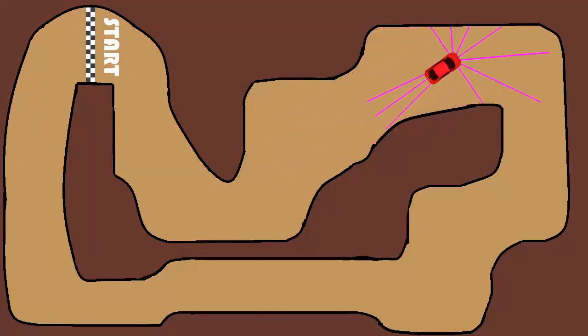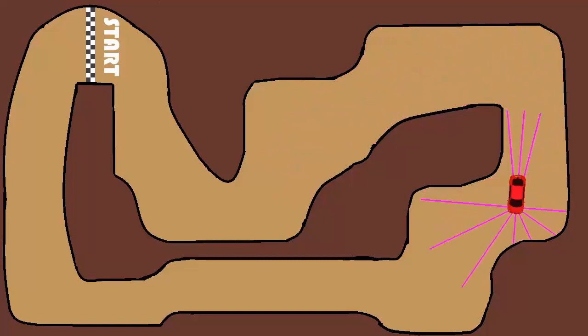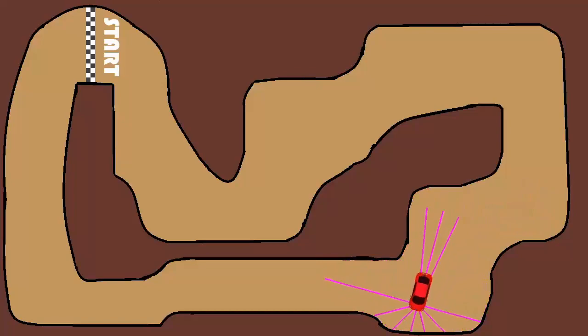I also give it input like its speed, its angle, what it's steering at, and some way of telling whether it's going in the correct direction or the reverse direction. But effectively this is what the AI is going to see. It just sees the length of this line and it's going to have to figure out what to do with it.